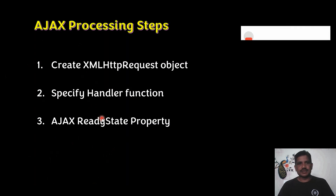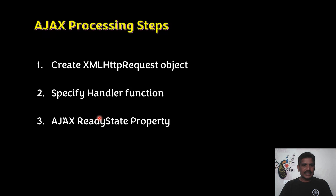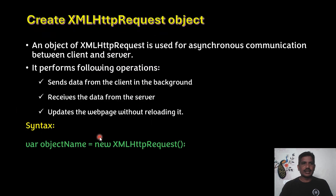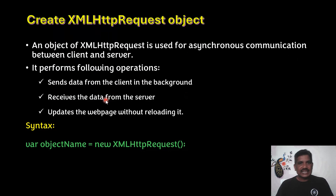Ajax processing steps: the first step is to create an XMLHttpRequest object. The second step is to specify a handler function. The third step involves the Ajax readyState property. The XMLHttpRequest object is used for asynchronous communication between the client and server, and it is the heart of Ajax.